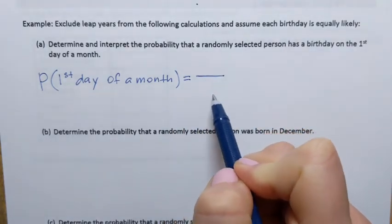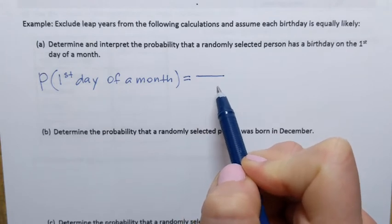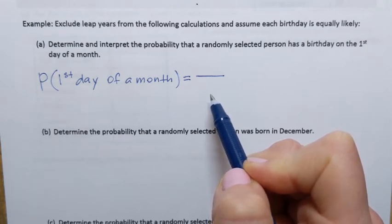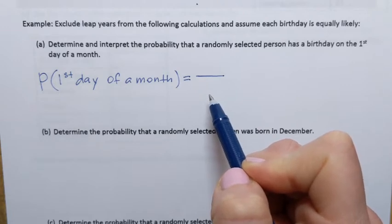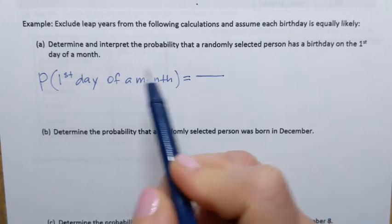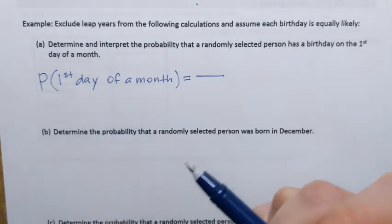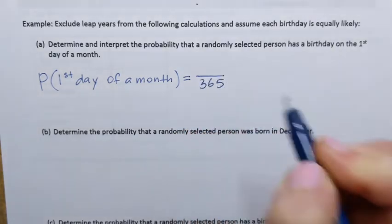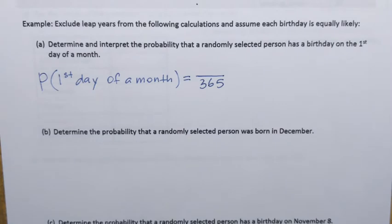To use the equally likely probability formula, we set up a fraction. The denominator always represents the total number of possible outcomes. When we ask a randomly selected person when their birthday is, the possible answers are January 1st, January 2nd, and so on. Since we're excluding leap years, there are 365 possible answers — 365 days in a year. That is the number of all possible outcomes, and it's always the denominator.